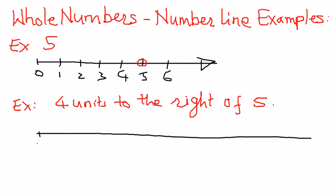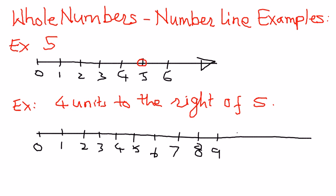We start drawing the number line. We'll start with 0 and then indicate some numbers: 1, 2, 3, 4, 5, 6, 7, 8, 9, 10, 11, 12, and then the numbers keep going. The arrow indicates that we can represent more numbers.